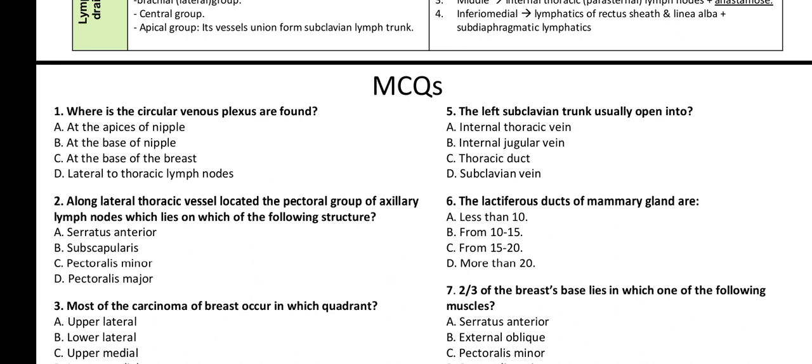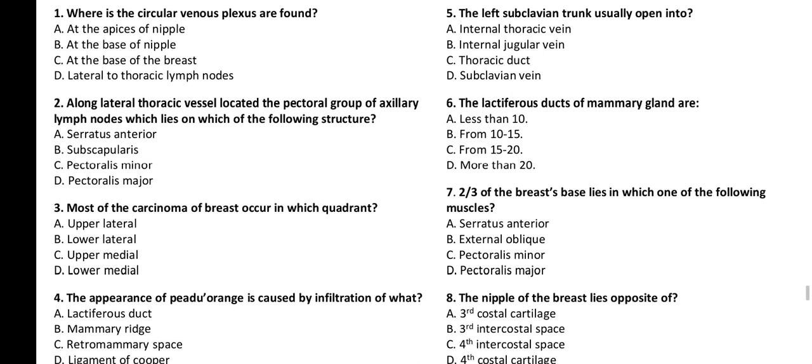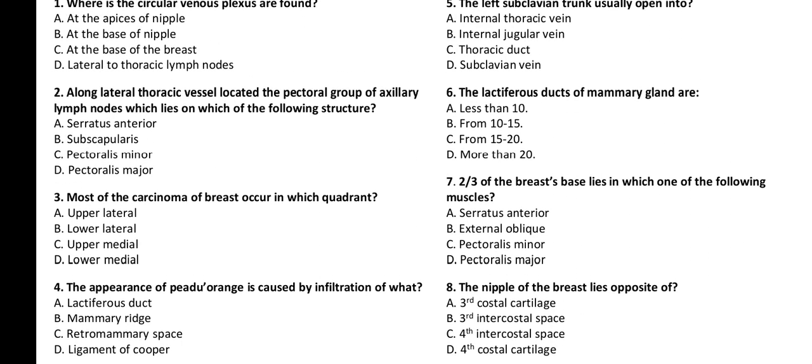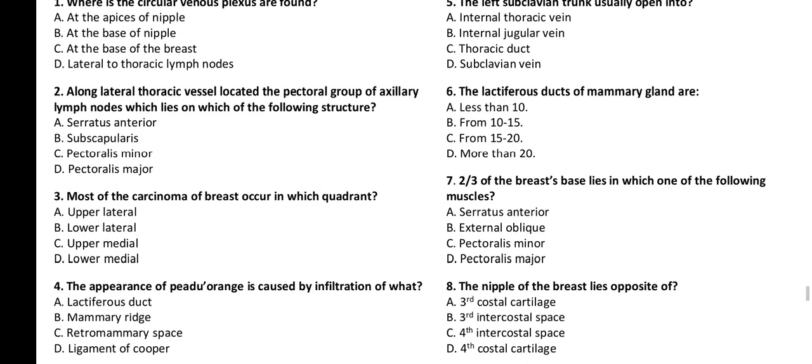Number six: The lactiferous ducts gland — I'll go with C, fifteen to twenty lobes. Number seven: Two-thirds of the breast lies on which of the following? I think it's pectoralis major, with the other portion on serratus anterior and external oblique muscle. I'll go with D. Number eight: The nipple of the breast lies opposite the fourth intercostal space — that is for women who have not breastfed. I'll go with C.